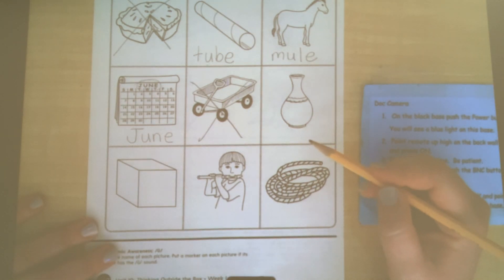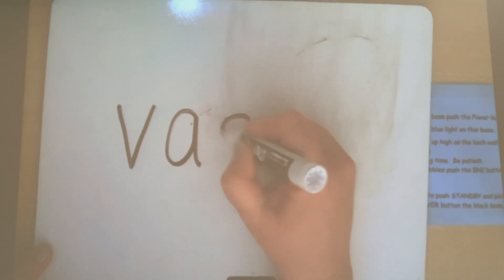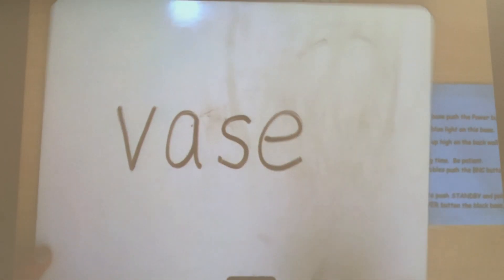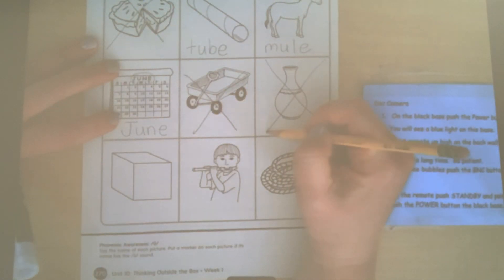Vase. Oh, vase has that long A sound, right? So let's figure out, even though it's not the long U sound, we did this a couple of weeks ago. So vase. V-A-E. But that's not a U. So what do we do? Cross it out.